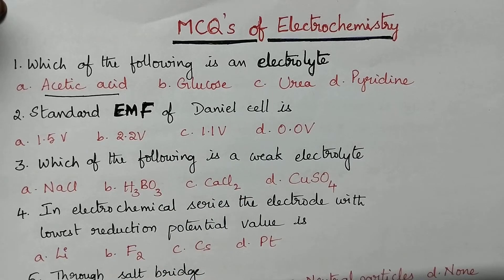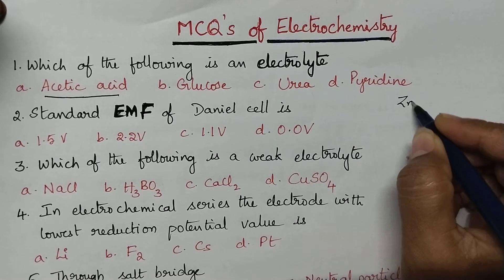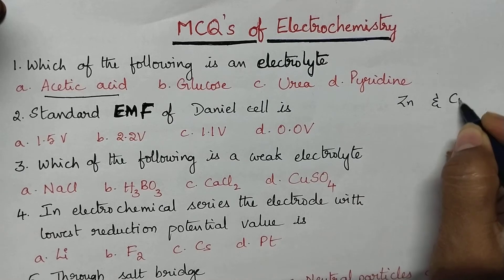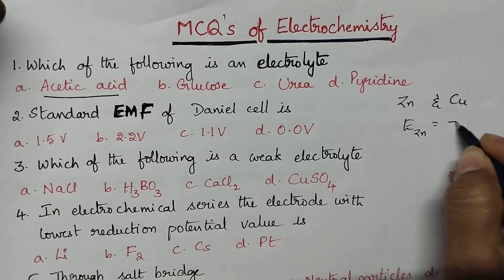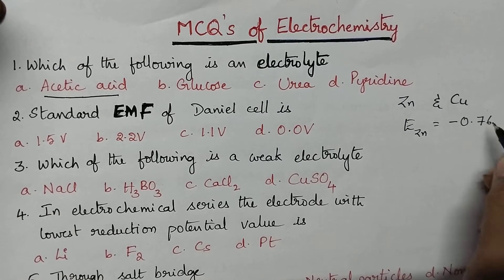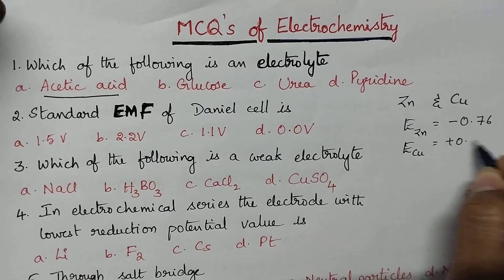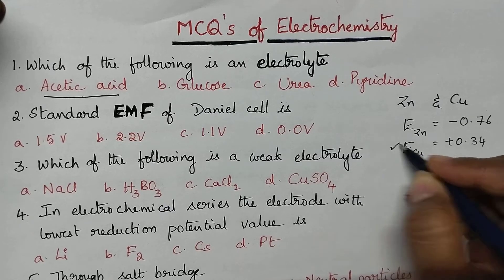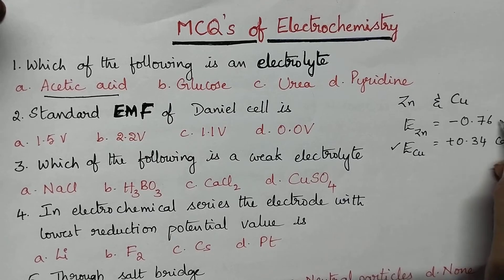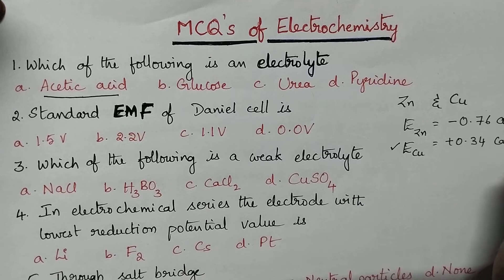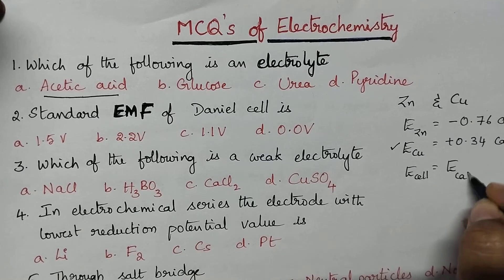Daniel's cell is a good example of a galvanic cell and it consists of two electrodes: zinc and copper. The electrode potential of zinc is −0.76 and that of copper is +0.34. The electrode having higher reduction potential will act as cathode and the other will act as anode. So, EMF of the cell is equal to E cathode minus E anode.